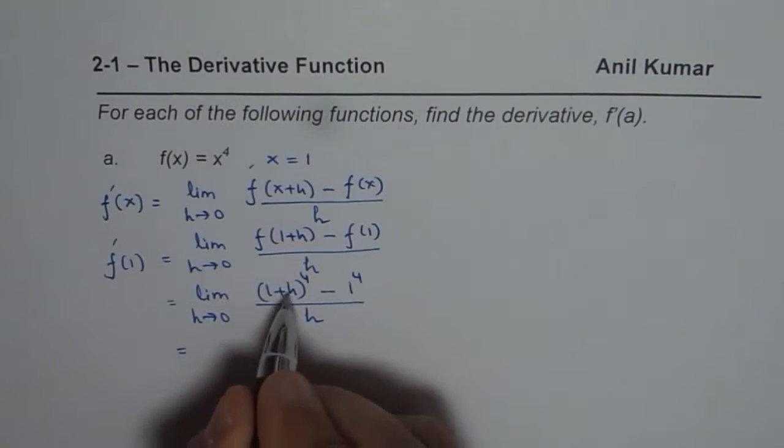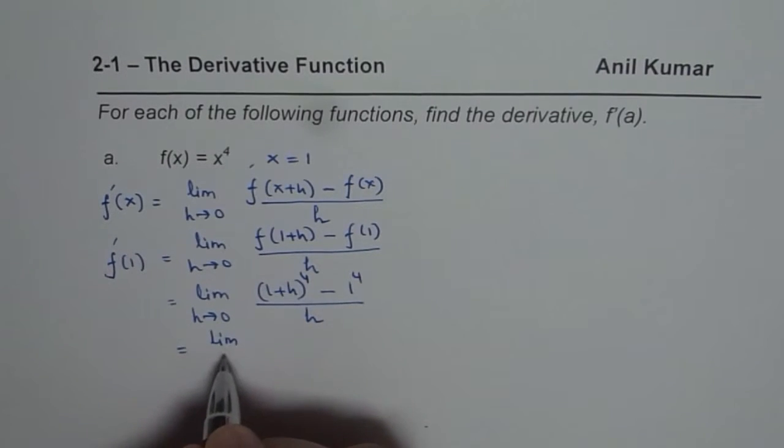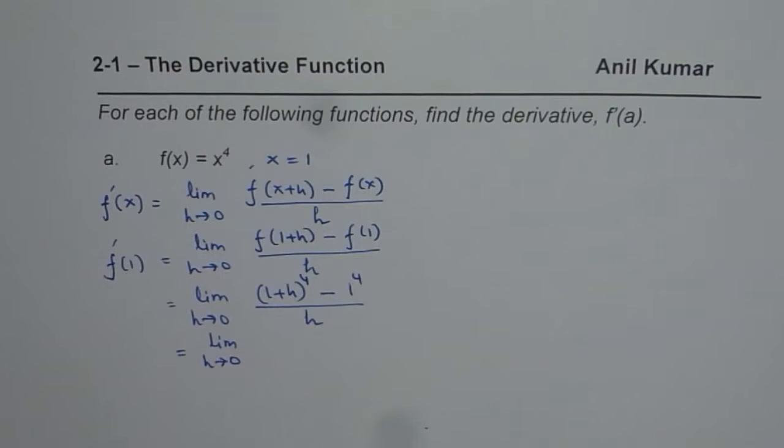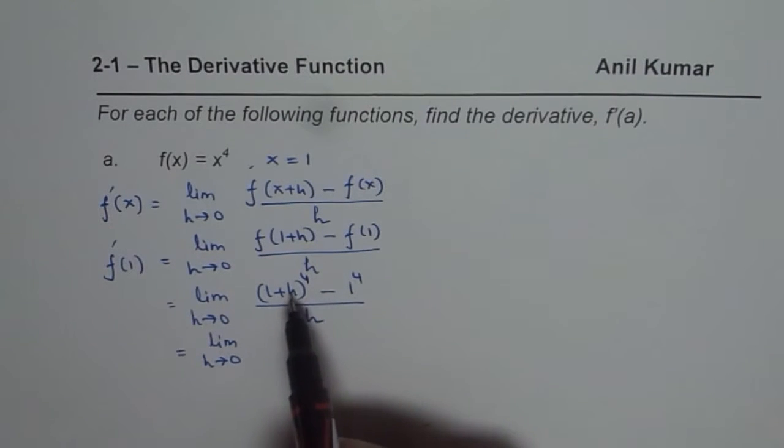Now we need to expand this limit h approaches 0. The whole idea is we have an exponent, a binomial, which is to the power of 4. I am sure many of you may not know how to expand this.